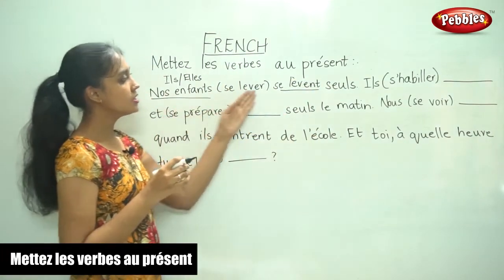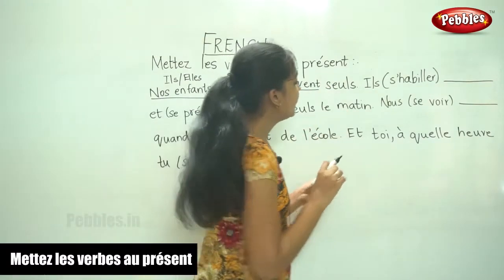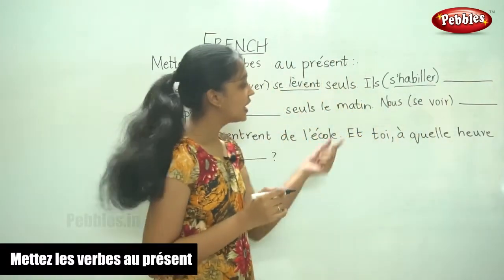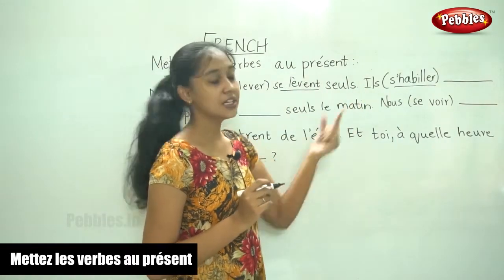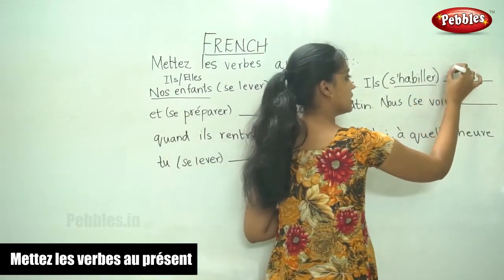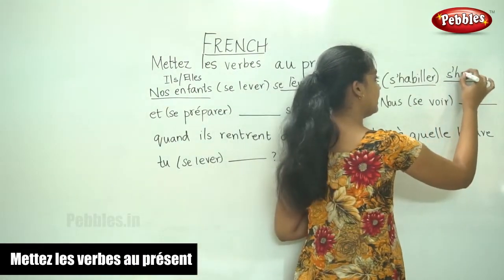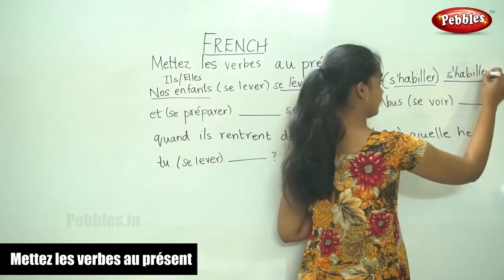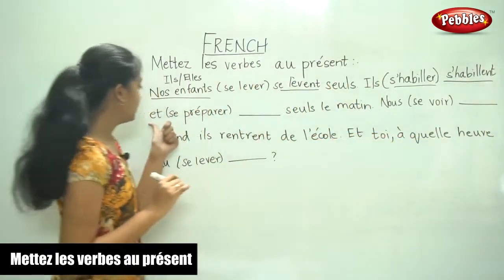Nos enfants se lève. Next: elle, and the verb given is s'habiller. Now, the subject is il, so se and for il, it is s'habille.